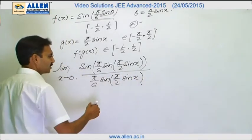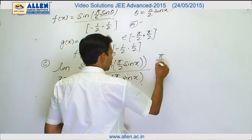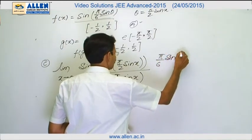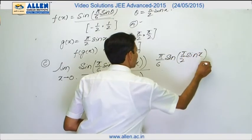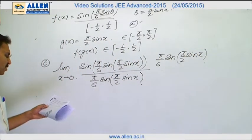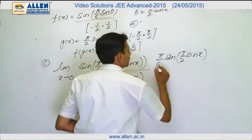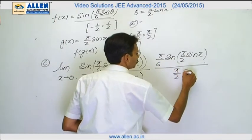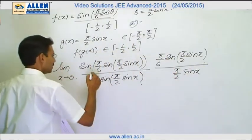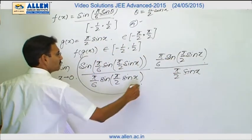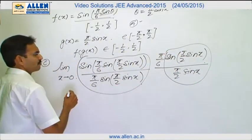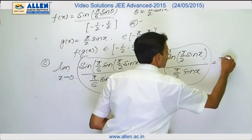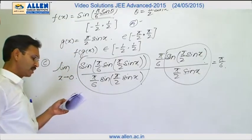I divided it, I am multiplying pi by 6 sine pi by 2 sine x. Now the denominator g(x) which is pi by 2 sine x. Now we can see this limit is 1, this limit is 1, so the final answer is pi by 6. C option is correct.